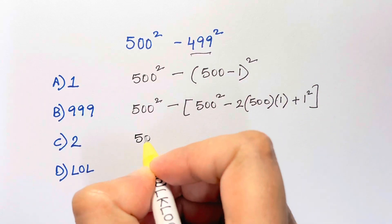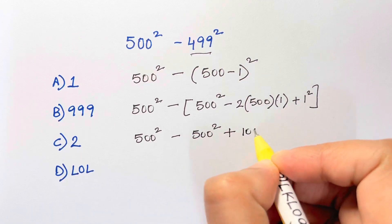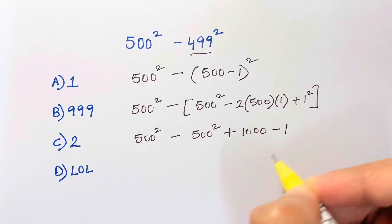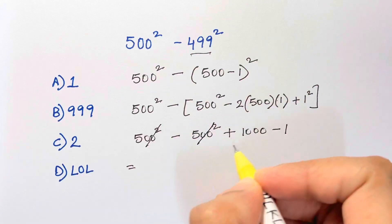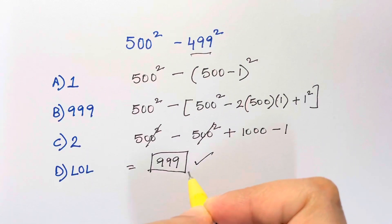That gives us 500² minus 500² plus 2 times 500, which is 1000, minus 1. Cancel out 500² with 500², and we get 1000 minus 1 is 999. That's our answer, and that was one method.